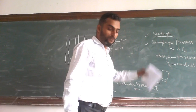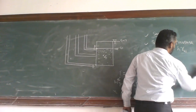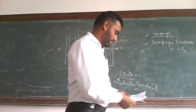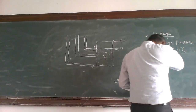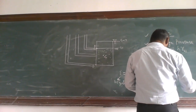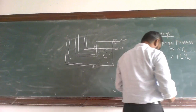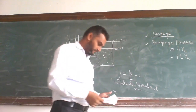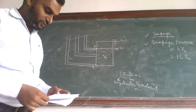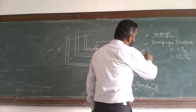If you put this in the form of seepage pressure, seepage pressure is equal to I into L into gamma W. So this is seepage pressure.